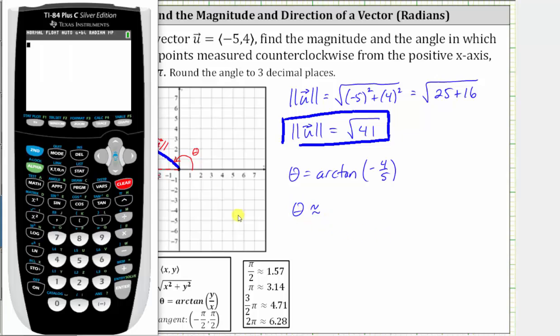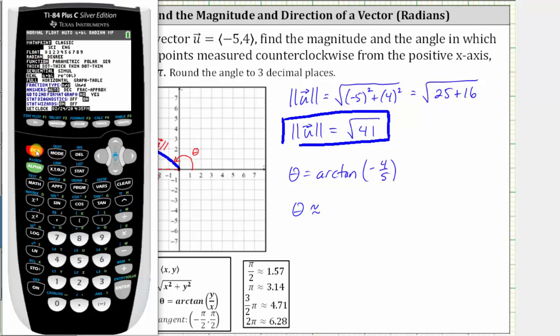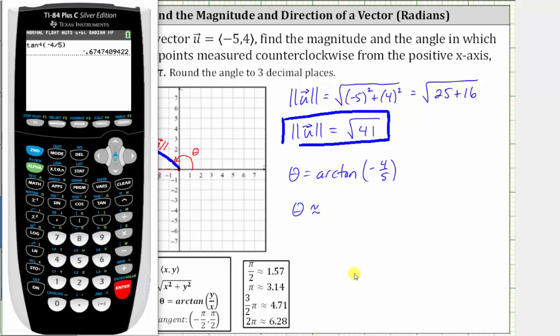Let's verify we are in radian mode. So we press mode. Radian is highlighted, so we go back to the home screen, and enter second tangent for arctangent or inverse tangent, negative four divided by five, close parenthesis, and enter. To three decimal places, we have approximately negative 0.675 radians.